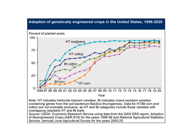Let's look briefly at some data from the U.S. Department of Agriculture on the adoption of genetically engineered crops in the United States. They're showing five different types of plants: herbicide-tolerant soybeans, cotton, and corn, as well as Bt cotton and Bt corn — we'll talk more about Bt traits in just a minute. You can see that about 95% of the acres planted to soybeans are herbicide-tolerant soybeans, and herbicide-tolerant cotton and corn are right up there as well.